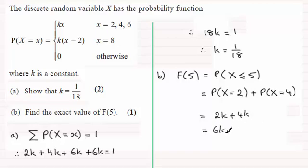And we know that k equals 1/18. So this is going to be 6/18, and 6/18 reduces down to 1/3. Okay?